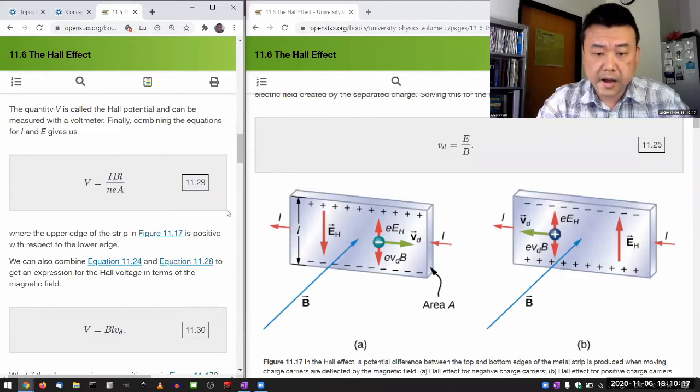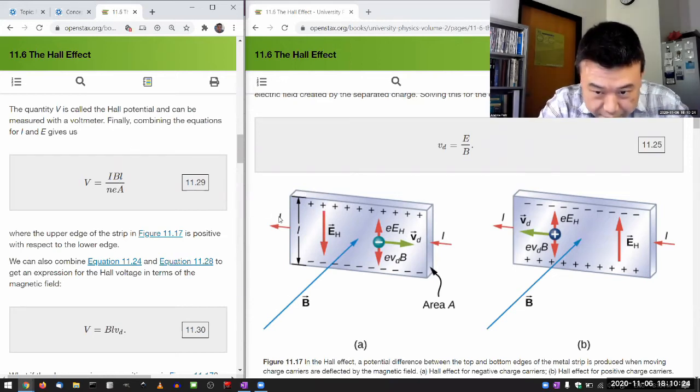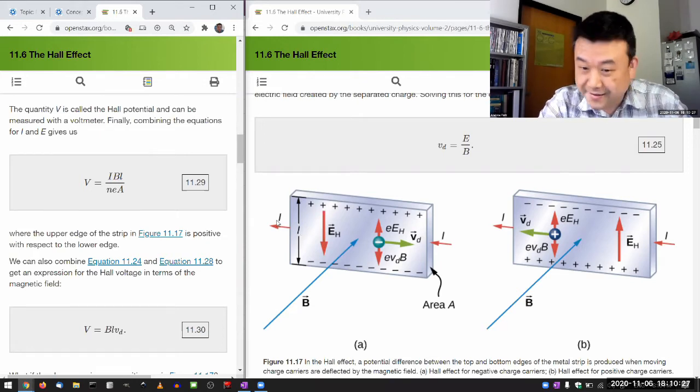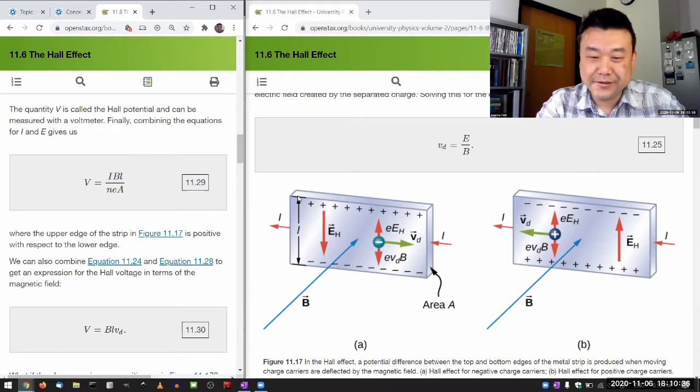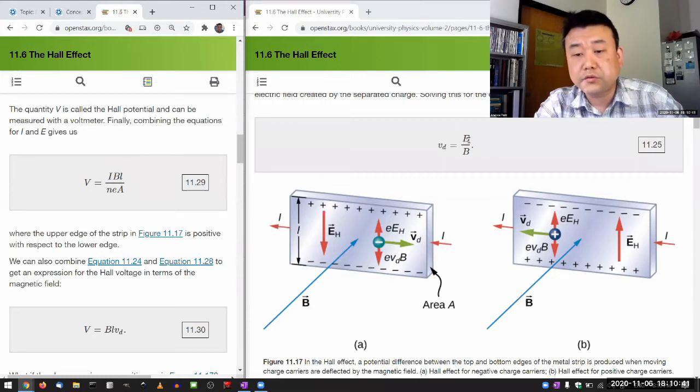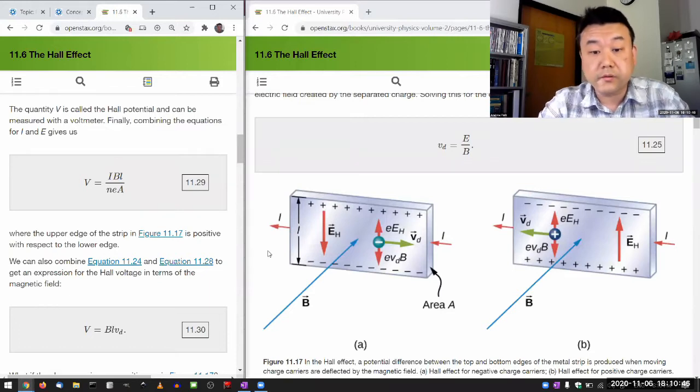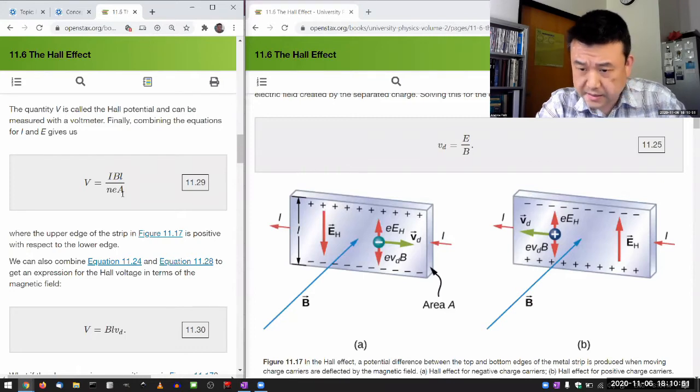So that's probably the biggest thing. The rest are fairly simple. I is the current, B is the magnetic field, L is the, well, these two letters are super confusing. So this is L, that is I. They look identical, but from the context, I can guess that this must be L. L refers to the distance between top and bottom, because what the condition sets really is the electric field. So if the distance is longer, then that results in greater voltage.